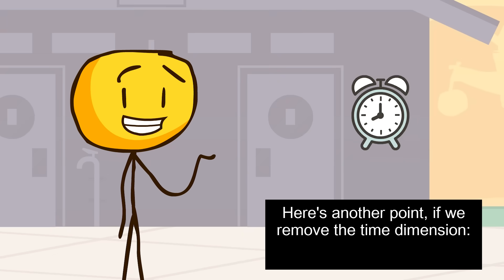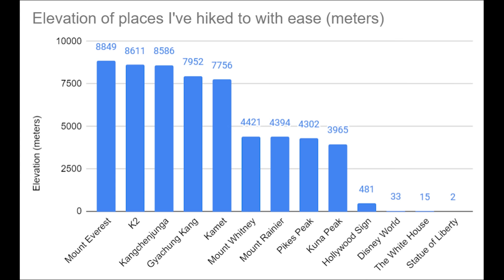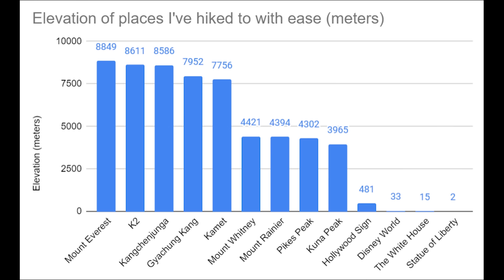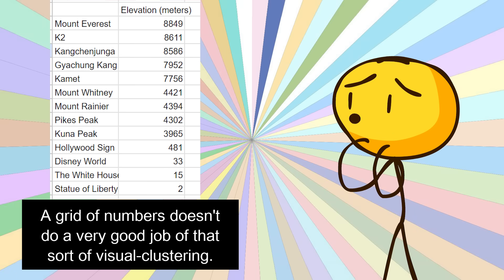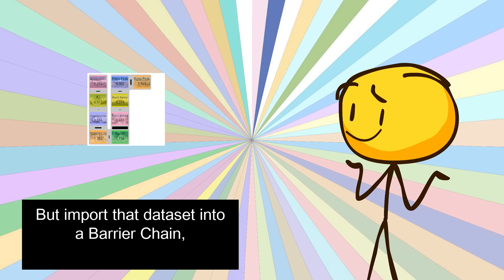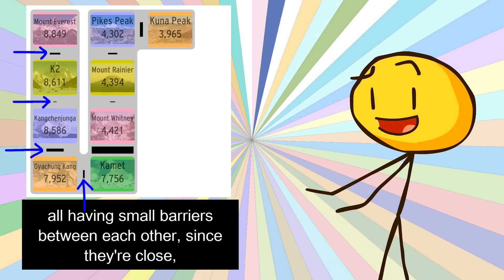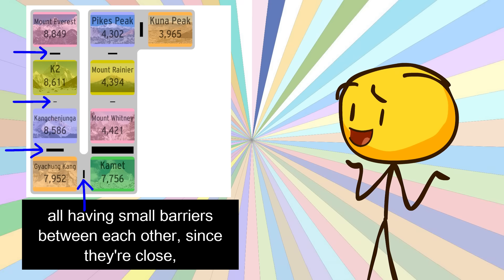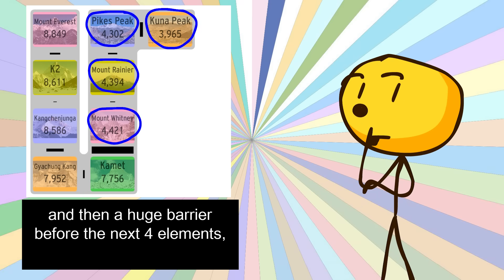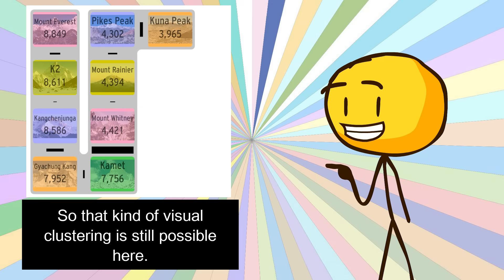Here's another point if we remove the time dimension. A still bar graph is great for showing you that maybe a cluster of five elements all have really high scores, then there's a really big drop, and the next four elements are all really low. A grid of numbers doesn't do a very good job of that sort of visual clustering — again, you have to do mental arithmetic to find the gap. But import that dataset into a barrier chain, and it's visualized by five elements at the top with small barriers between each other, and then a huge barrier before the next four elements, which are in a different league. So that kind of visual clustering is still possible here.